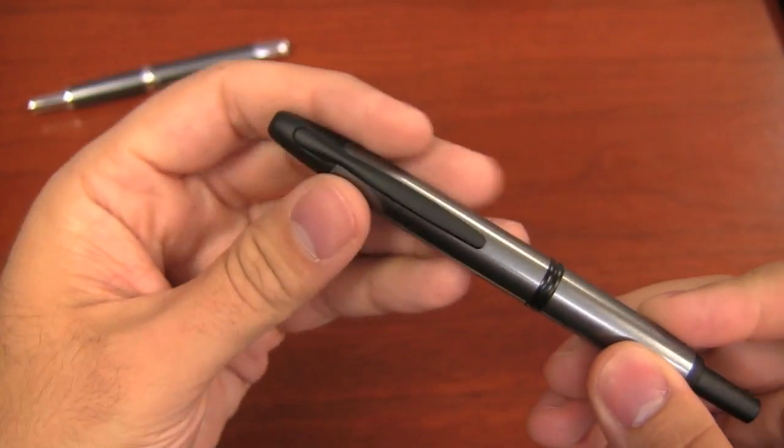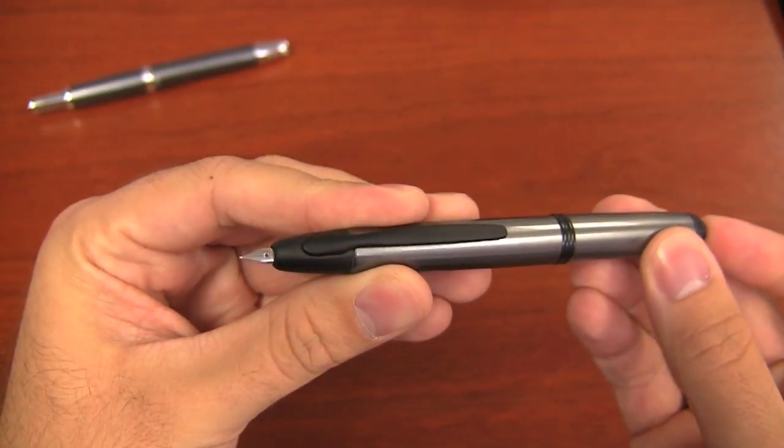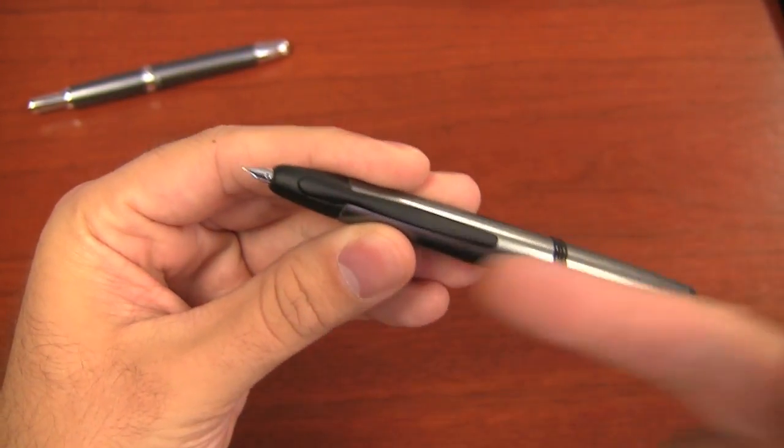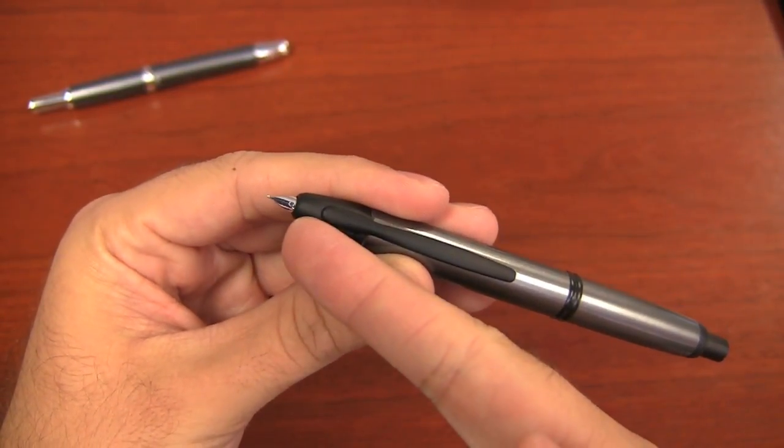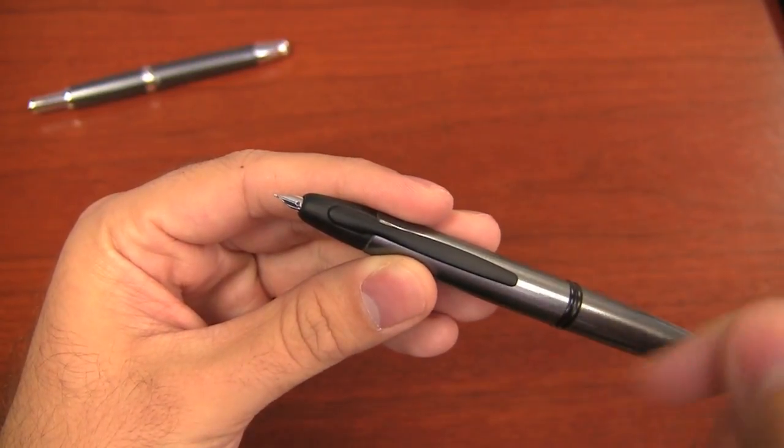If you're not familiar with the Vanishing Point, it is a click retractable fountain pen. It comes with a rhodium plated 18 karat gold nib.